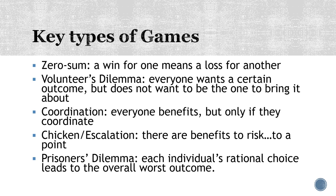There are various kinds of coordination games, where everybody benefits but only if they coordinate. For example, it doesn't really matter which side of the road we drive on, as long as everybody drives on the same side. It ultimately wouldn't matter if a red light meant go and a green light meant stop, as long as everybody uses the same color to mean the same thing. And there are games of escalation — essentially games of chicken — where there are some benefits to engaging in risk up to a point, but beyond that point there's disaster.